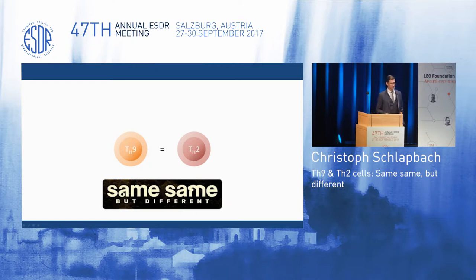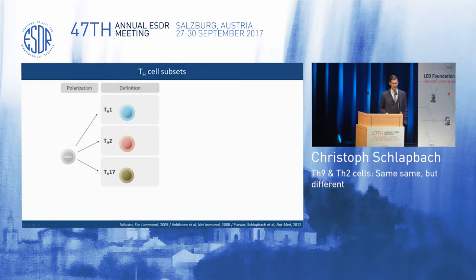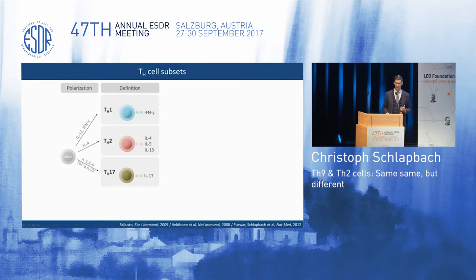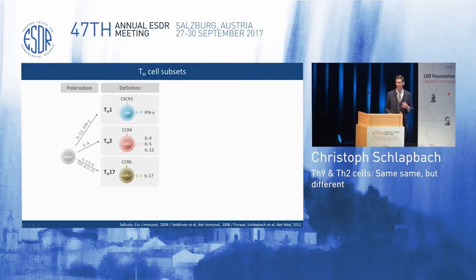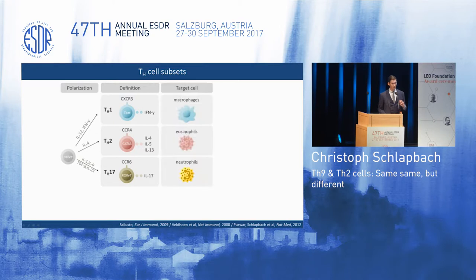Let me start with an introduction into the family of T helper cells. When a naive T cell is polarized, it can be polarized into distinct subsets, all of which can be defined by four properties: the cytokines required to induce polarization, the cytokines these cells themselves express — for instance, Th1 cells are differentiated under the influence of IL-12 and then express interferon gamma — certain chemokine receptors, such as Th17 cells residing within the CCR6 positive population, and master gene regulators which are transcription factors that orchestrate and stabilize the phenotype. All of these cells also have distinct target cells through which they exert distinct function in health and disease.